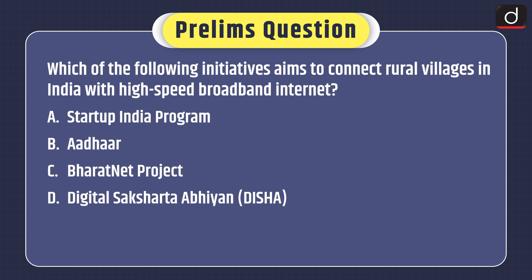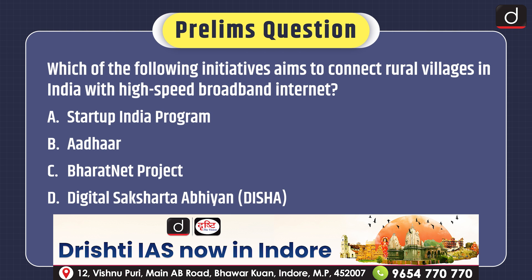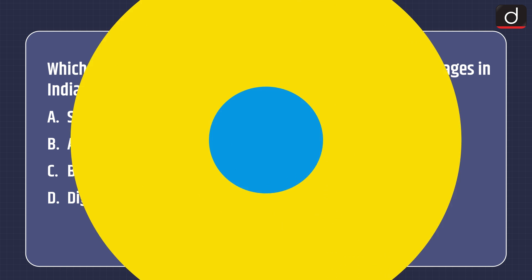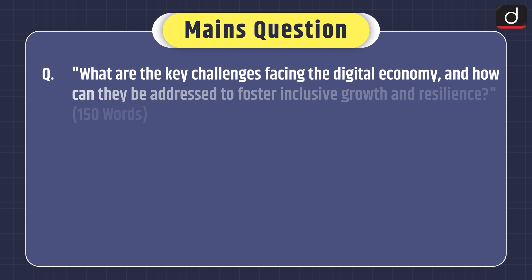Now it's time for practice questions. Prelims-based question: Which of the following initiatives aims to connect rural villages in India with high-speed broadband internet? Options: Startup India Program, Aadhaar, Bharat Net Project, or Digital Saksharta Abhiyan. You can send the answer in the comment section. Mains practice: What are the key challenges facing the digital economy and how can they be addressed to foster inclusive growth and resilience?